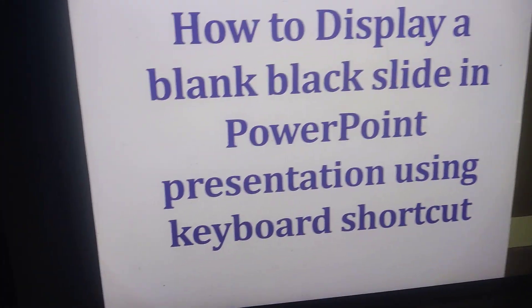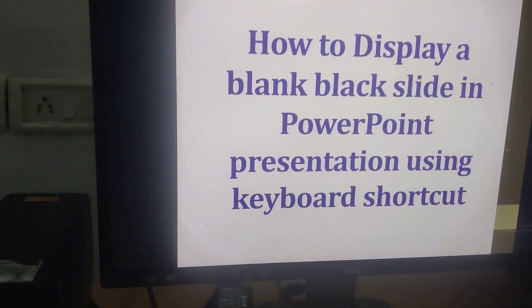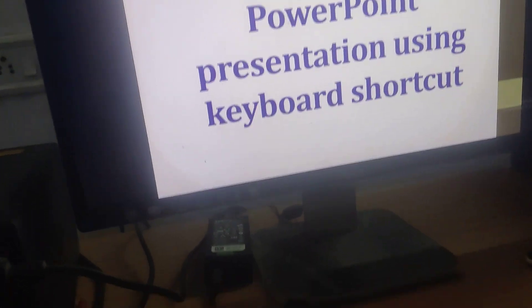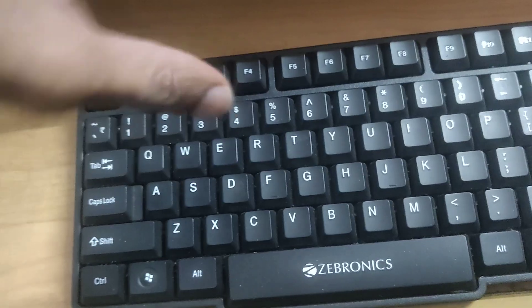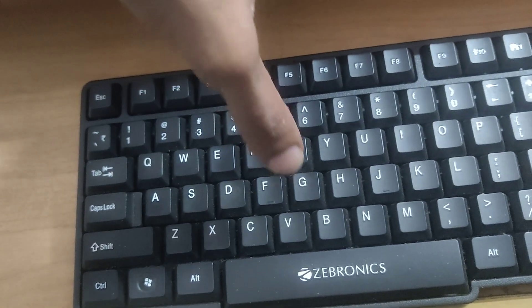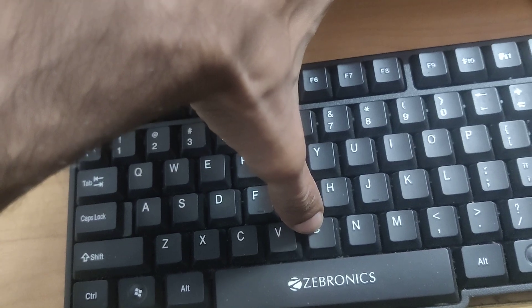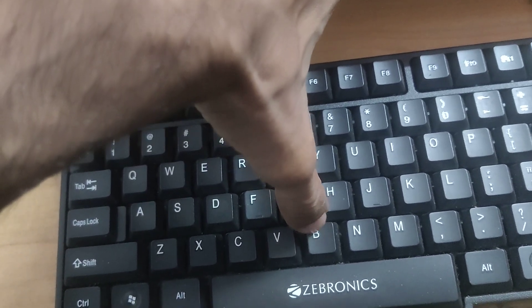If you want to display a blank black slide in PowerPoint presentation, then you must simply press the B key on your keyboard while you're running the PowerPoint presentation. If you press the B key, then you can see that a blank black screen has appeared.